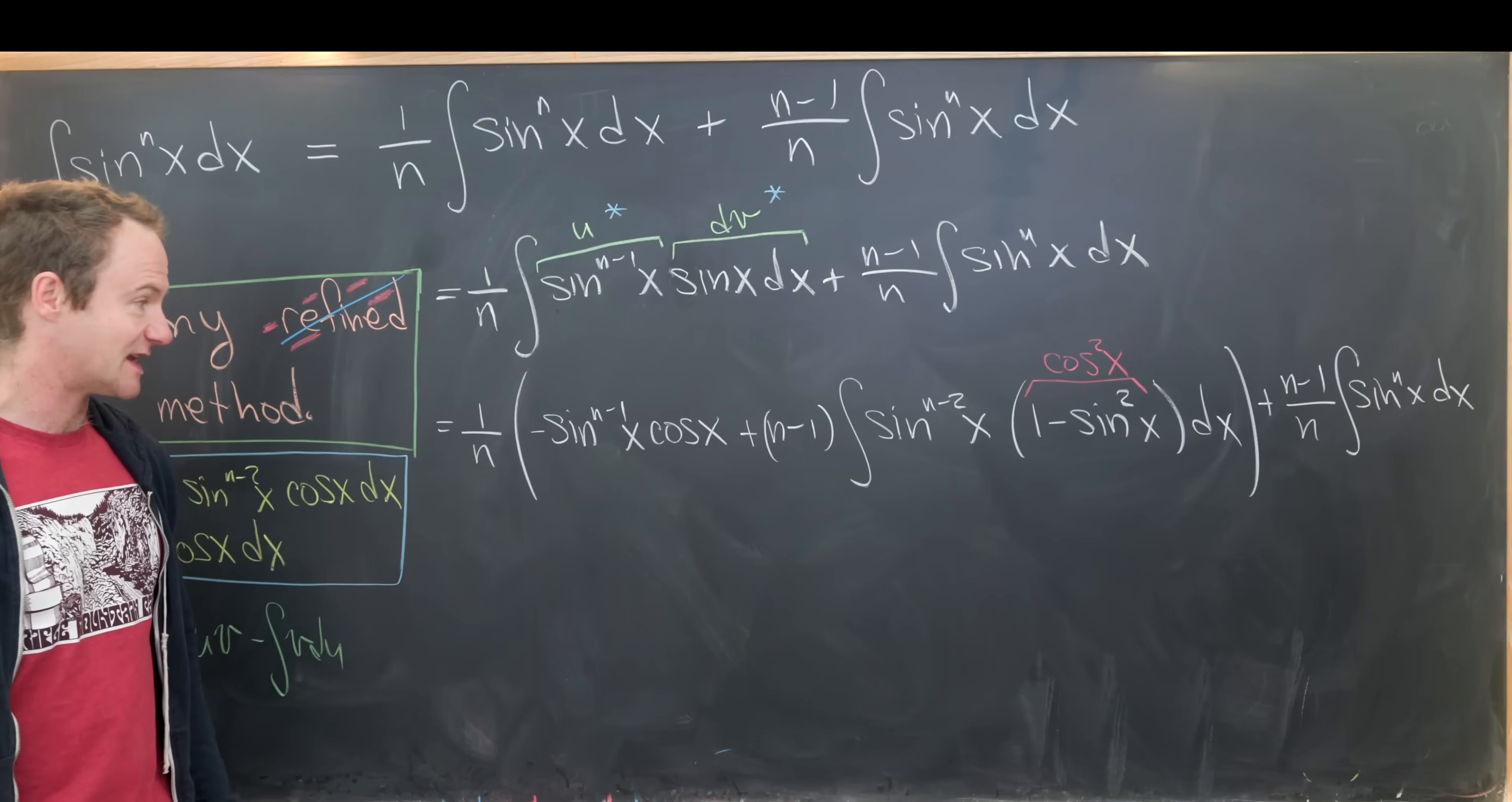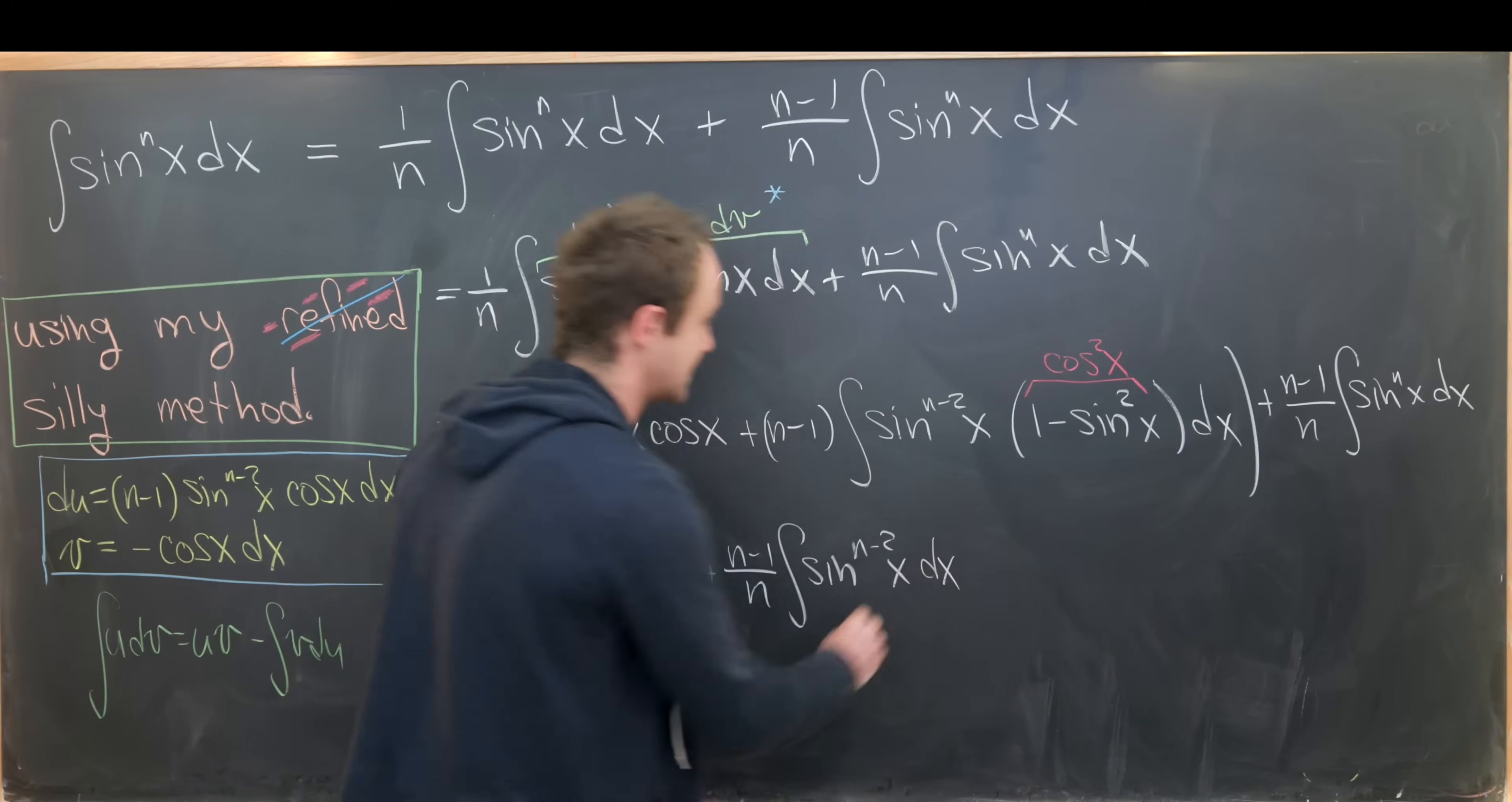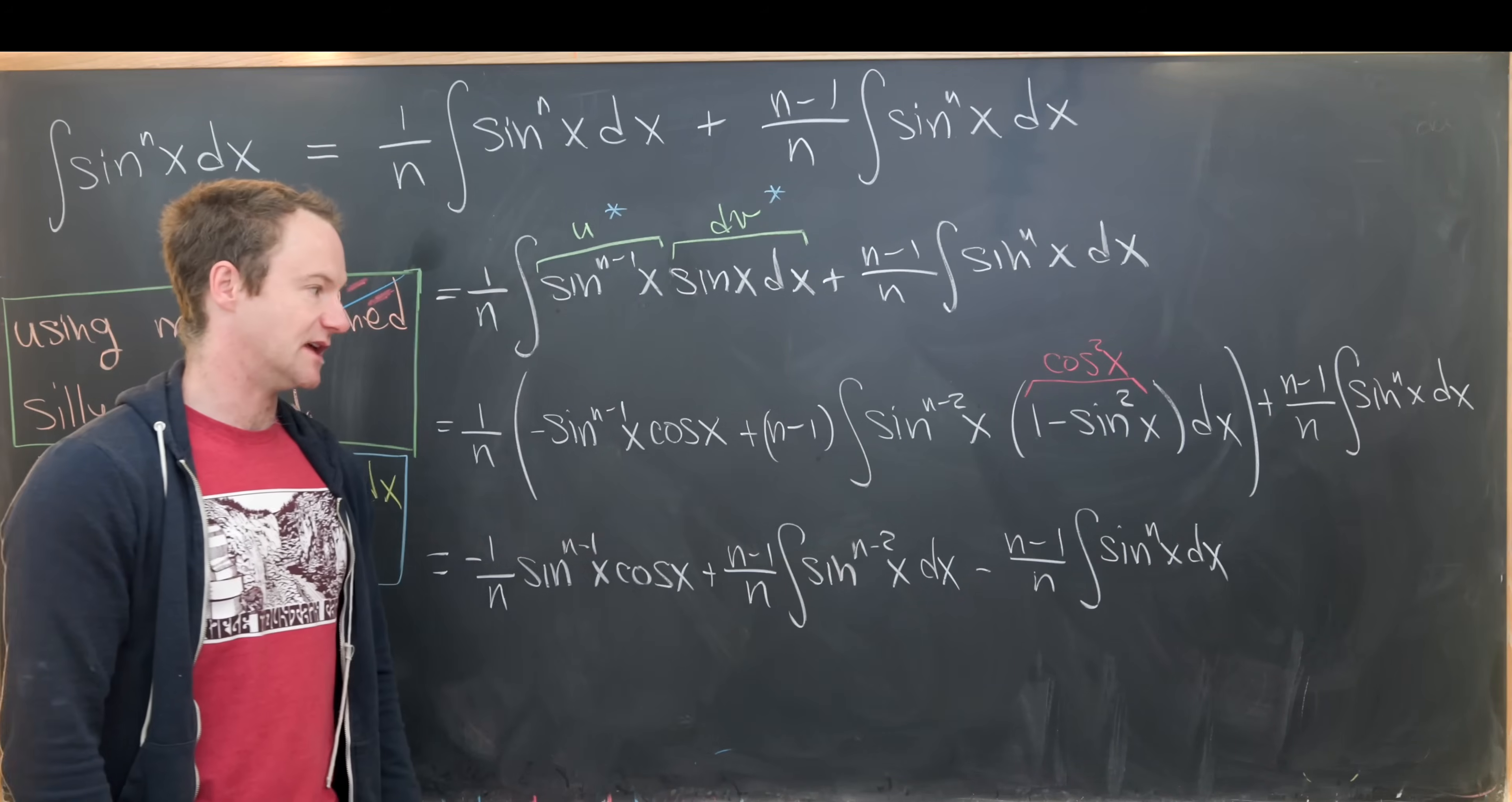Okay, so now let's expand this out a little bit. So we can take this minus sign here and have it combined with this one over n, leaving us with minus one over n, we have sine n minus one x cosine of x. And then we'll have plus n minus one over n, the integral of sine n minus x dx. So we get that from this sine n minus two, multiplying on this number one. And then we'll have a minus n minus one over n integral of sine n x dx. And that comes from this n minus one multiplying onto this negative sine squared, along with the sine to the n minus two.